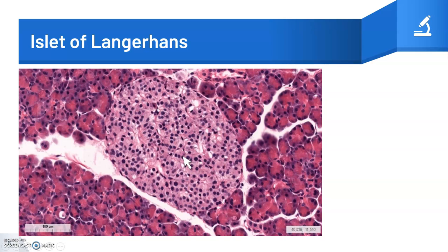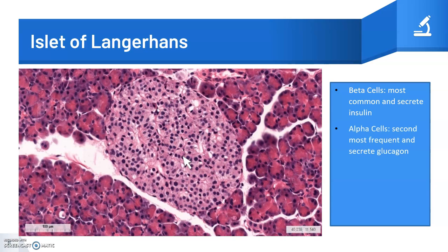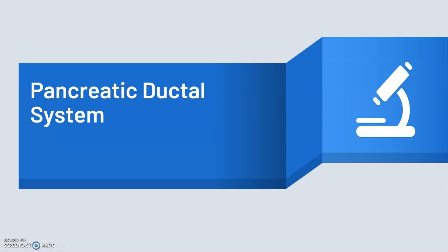Islets contain four major types of endocrine cells: beta cells, which are the most common and secrete insulin; alpha cells, which are the second most frequent and secrete glucagon; delta cells, which secrete somatostatin; and PP cells, which secrete pancreatic polypeptide. All these cells are indistinguishable in a hematoxylin and eosin stain.